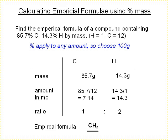Right, you can do the same using a percentage mass. So find the empirical formula of a compound containing 85.7% carbon, 14.3% hydrogen by mass. So the percentage mass you can apply to any amounts. You can just choose that we had a total of 100 grams, which would suggest that you had 85.7 grams of carbon, 14.3 grams of hydrogen. We can just use exactly the same numbers here.